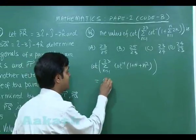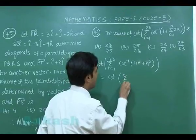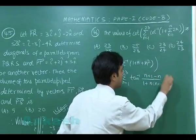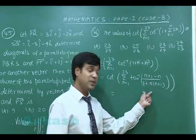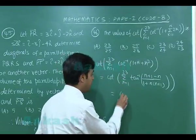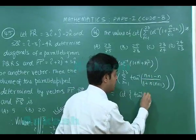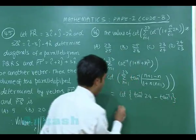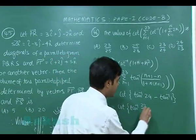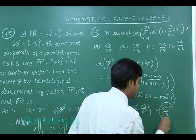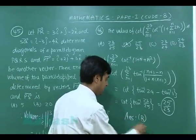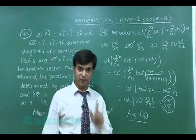The term 1/(1 + n·(n+1)) can be split using the identity: tan⁻¹((n+1) − n) / (1 + n(n+1)) = tan⁻¹(n+1) − tan⁻¹(n). Applying the telescoping summation from n=1 to 23 gives cot(tan⁻¹(24) − tan⁻¹(1)). Using the tan subtraction formula: (24−1)/(1+24) = 23/25, so cot(tan⁻¹(23/25)) = 25/23. The correct answer is option B: 25/23.